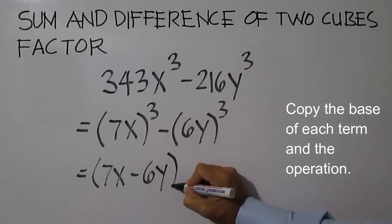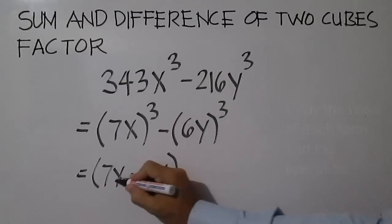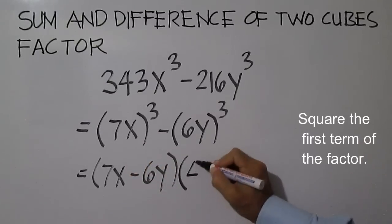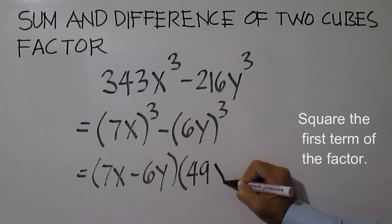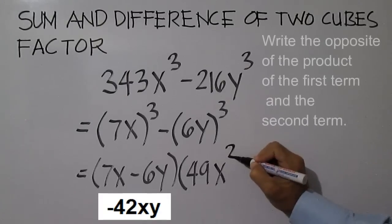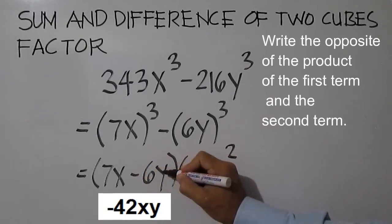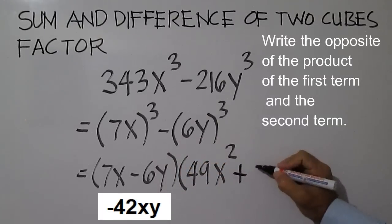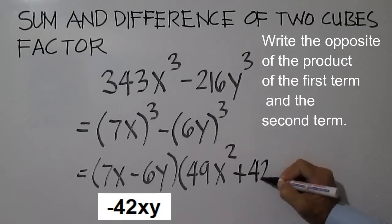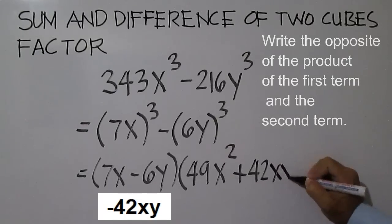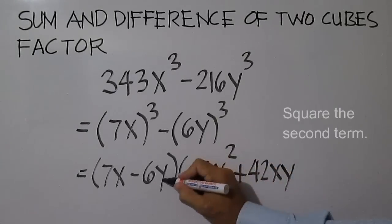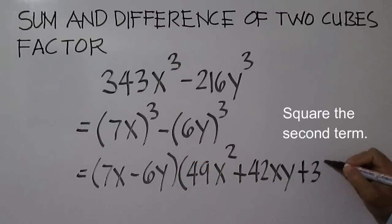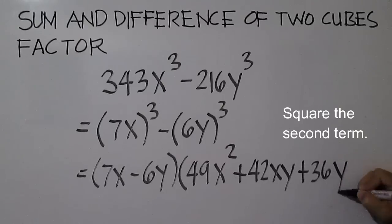Use this factor. Square the first term: 7x times 7x is 49x squared. Then multiply the first term and the second term: negative 42xy. Write the opposite: 42xy. Then square the second term: negative 6y times negative 6y is 36y squared.